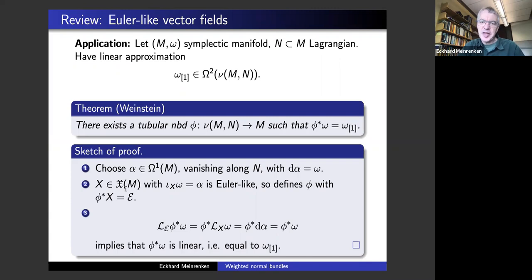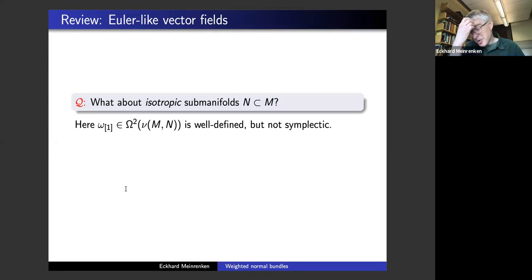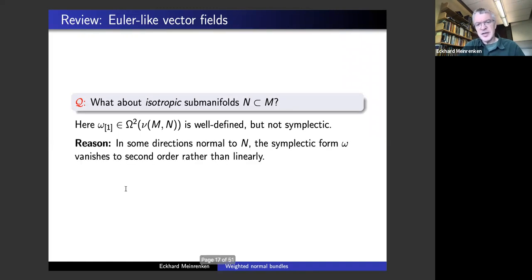This worked very nicely. But now you can ask: how about isotropic sub-manifolds? Why can't we use the same method? The symplectic form pulls back to zero, so you can look at its linear approximation. The problem is the linear approximation is well-defined, but it's just not symplectic. The reason is that there are some directions normal to your sub-manifold where the symplectic form vanishes linearly, but there are other directions where it vanishes more like quadratically. If you just take the linear approximation in those quadratic directions, you lose — the linear approximation becomes degenerate, and there's no way it can serve as a good model for a manifold near the isotropic.